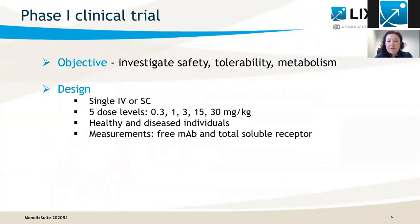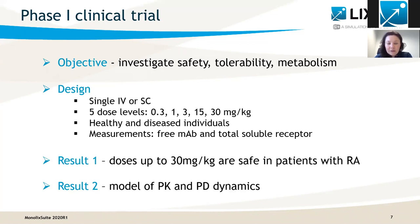At the first step, the objective is to investigate the safety, tolerability in patients, and metabolism of the drug. So you start the phase one clinical trial — a first-in-human study with a single dose, administered by infusion or subcutaneous route with five dose levels, done on a relatively small group of individuals who are either healthy or with disease. As a result, you show that there are no adverse effects up to 30 milligrams per kilogram dose, so it's safe in patients with the disease. In addition, using measurements of free drug and total soluble receptor, you can model PK and PD dynamics.